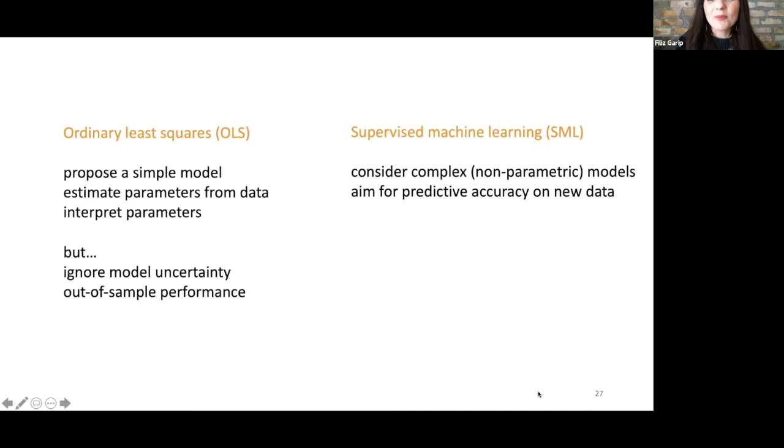Supervised machine learning addresses some of these issues, but it has its own issues as well. Here, we're not considering a simple model. We're considering very complex, often non-parametric models. And our goal is to improve predictive accuracy on new data. We're selecting our model based on its ability to predict not only on our data set at hand, but a separate portion of the data that it hasn't yet seen. But the downside is we often end up with black box results. In other words, we're not getting these beta coefficients that describe the nature of the relationship between X and Y. So we don't gain particular insights, but we do gain predictive accuracy.